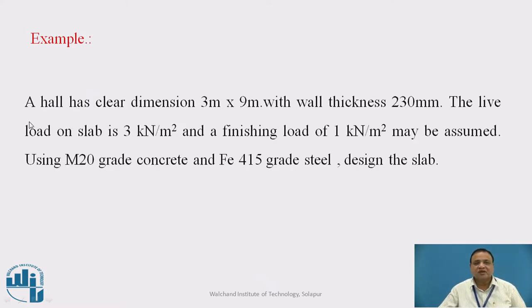Example: A hall has a clear dimension 3 meter by 9 meter, with wall thickness 230 mm. The live load on the slab is 3 kN per meter square, and a floor finishing load of 1 kN per meter square may be assumed. Use M20 concrete and Fe415 grade steel. Design the slab.